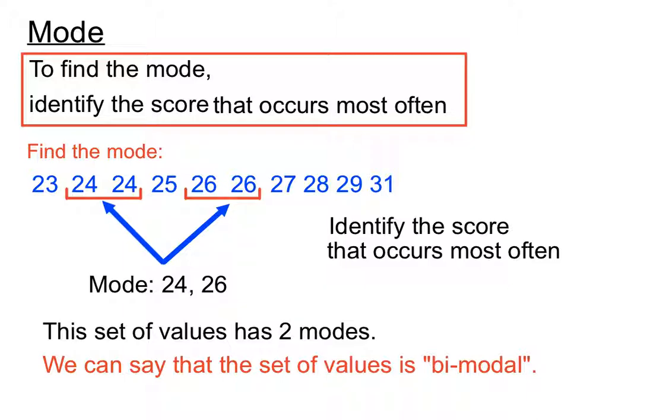And we can have sets of values that are trimodal as well. So you are allowed to have more than one mode if there's a tie for how many times those scores occur.